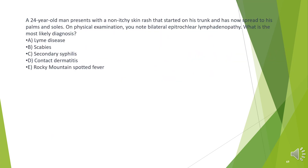A 24-year-old man presents with a non-itchy skin rash that started on his trunk and has now spread to his palms and soles. On physical examination, you note bilateral epitrochlear lymphadenopathy. What is the most likely diagnosis?